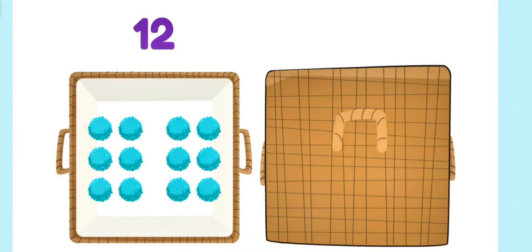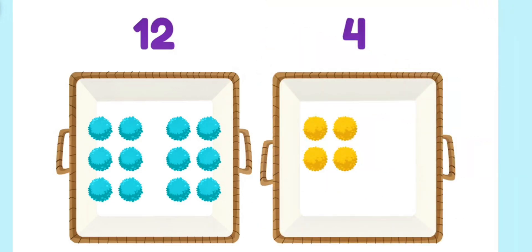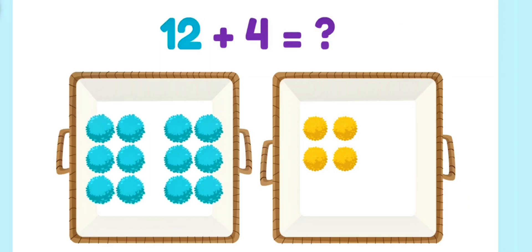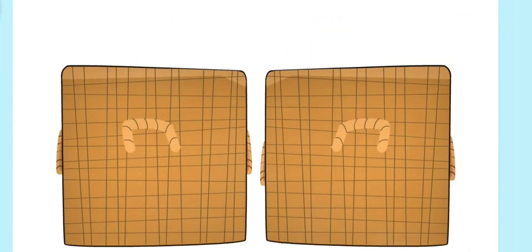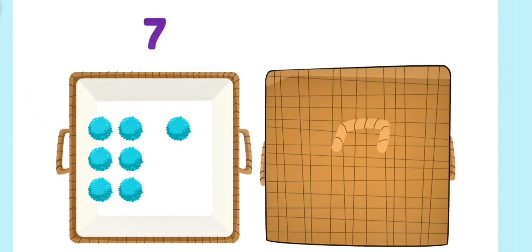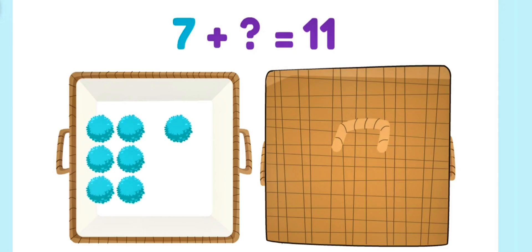There are twelve blue pom-poms in this container! And four yellow ones in this container! How many pom-poms are there altogether? Twelve plus four is sixteen! Let's try something else! Now, there are seven pom-poms in this container! And I don't know how many there are in this container! But I do know there are eleven total! Seven plus what equals eleven? Seven plus four equals eleven!